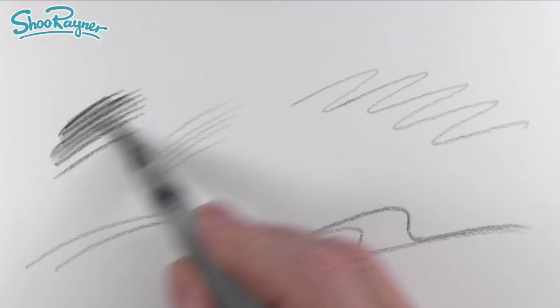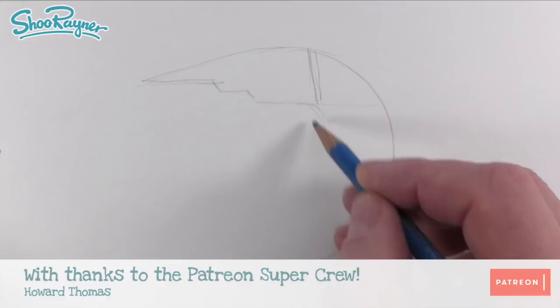This is a Derwent watercolour sketching pencil. I think you can get other brands. What happens is when you draw it, it's just like drawing with a graphite pencil. Quite a nice chunky kind of dark pencil, but then when you brush over with water it all goes wishy-washy watercolour. So let's not talk about it, let's see what it's all about.